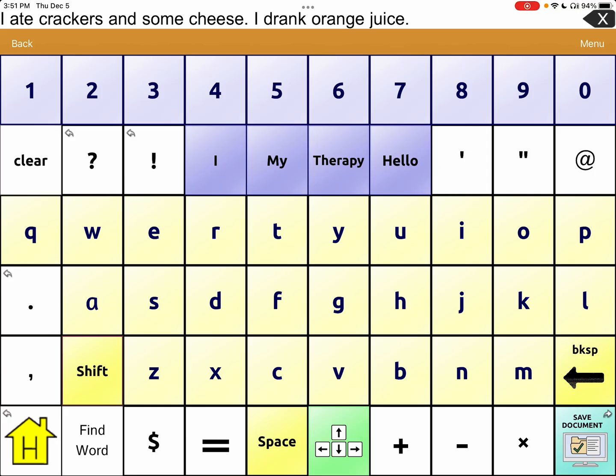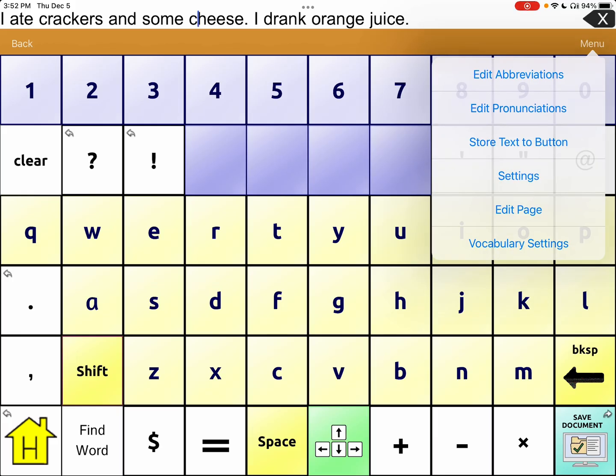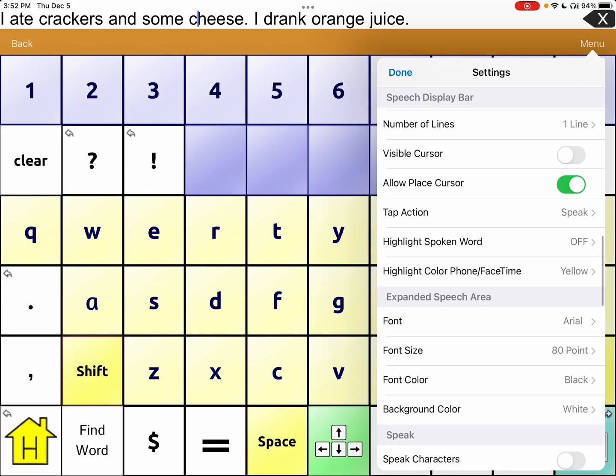So that's how you can do it. So you can either use the arrow buttons to edit. Again, you can go by character. You can just go back by word or you can go back all the way to the sentence. And you can go forward character, go forward word, go forward sentences, or you can make sure in your settings that you have the ability to use the cursor. Again, it's in settings and allow place cursor. So right there.